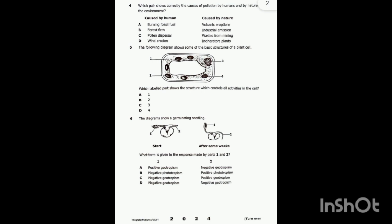The part that moves towards gravity shows positive geotropism, and the part moving away from gravity shows negative geotropism. Part one is moving upwards — away from gravity — so it is negative geotropism. Part two is the root, moving towards gravity, so that is positive geotropism.